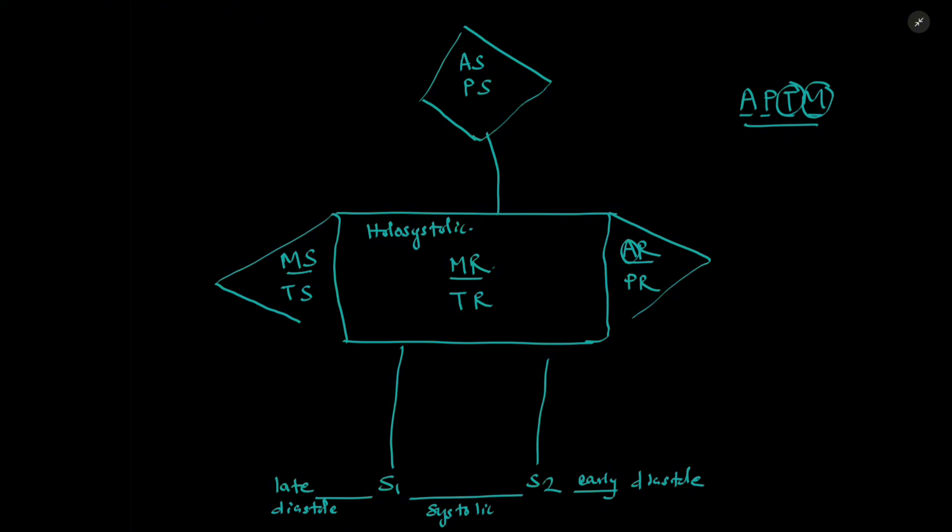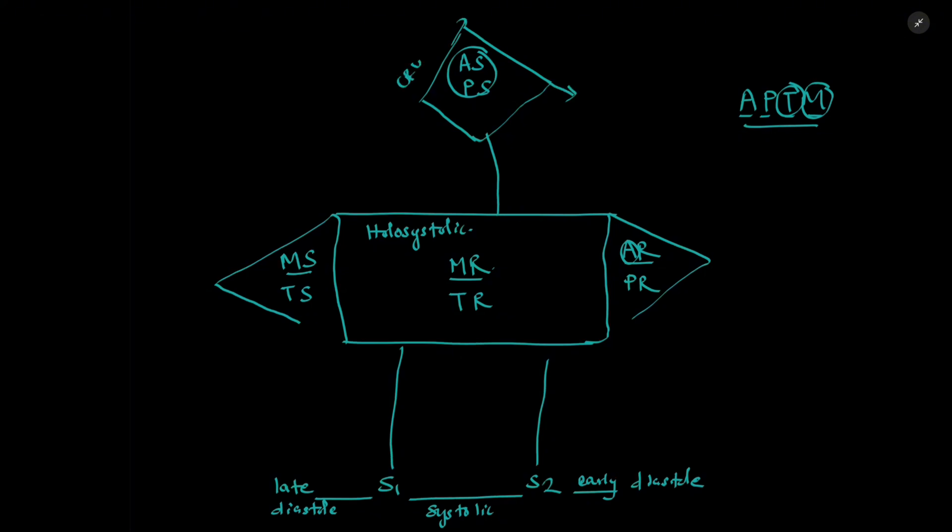Let's fill in some extra details as well. So the shape of these two murmurs will be represented by this crescendo and decrescendo. Similarly, these two will be preceded by an opening snap. And we can also add a decrescendo here. It's commonly referred to as early decrescendo and a crescendo here.